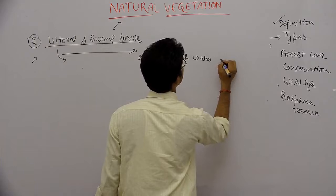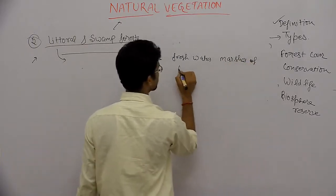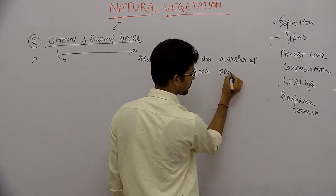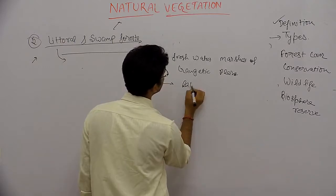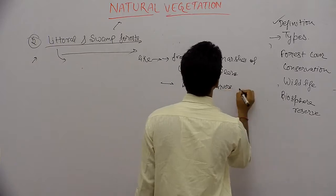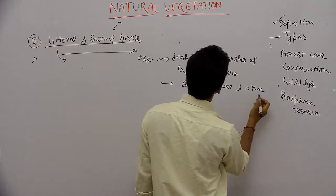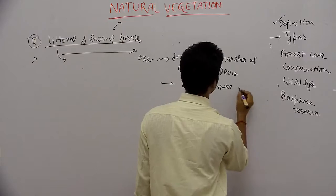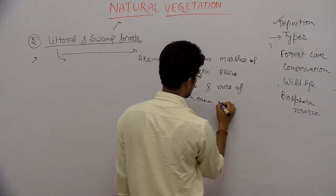These eight groups include freshwater masses of the Gangetic plains, lakes and rivers of the plains, and lakes and rivers of mountain regions.